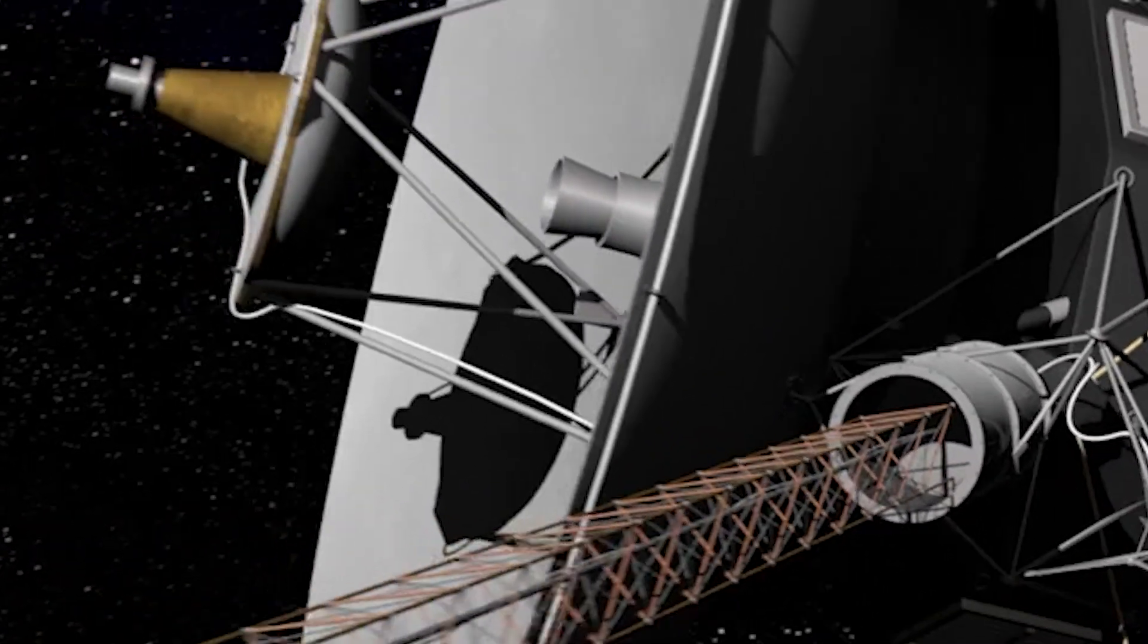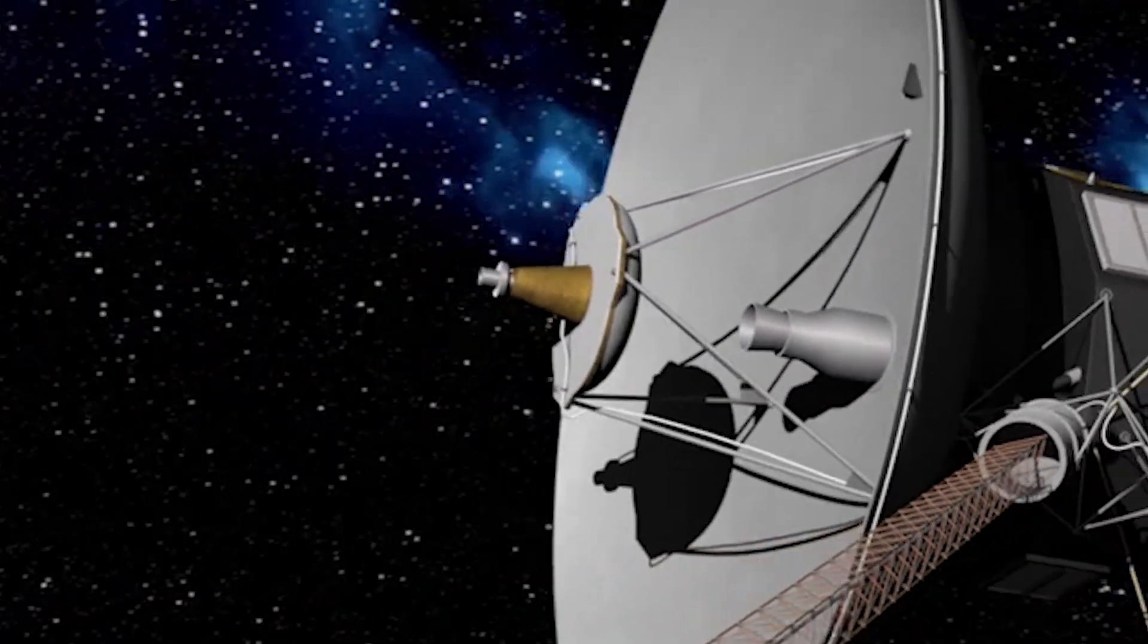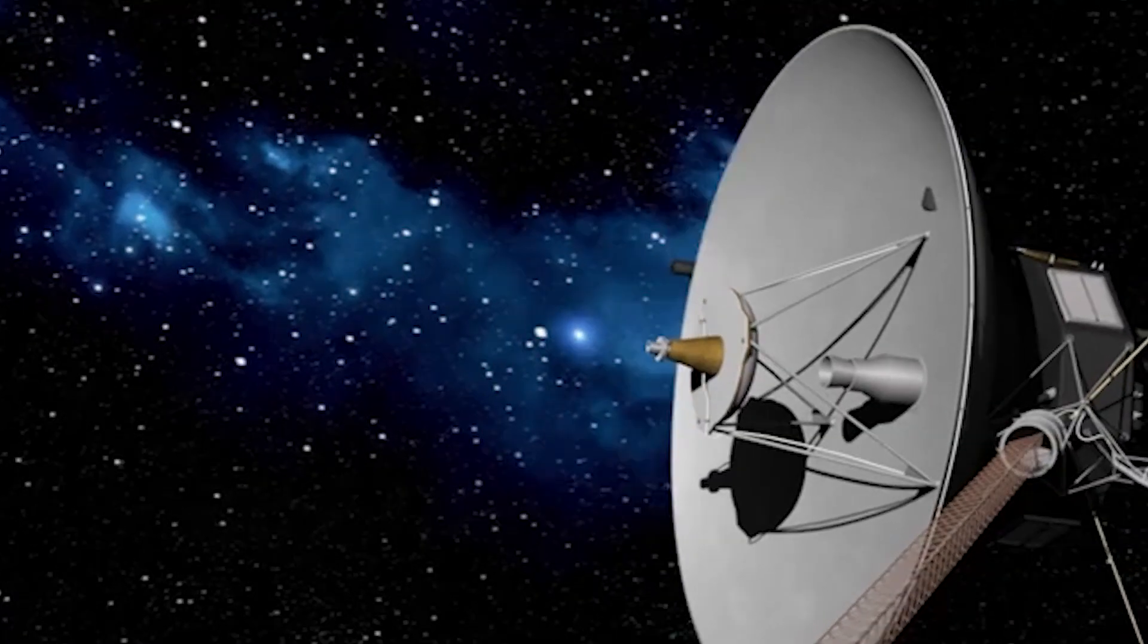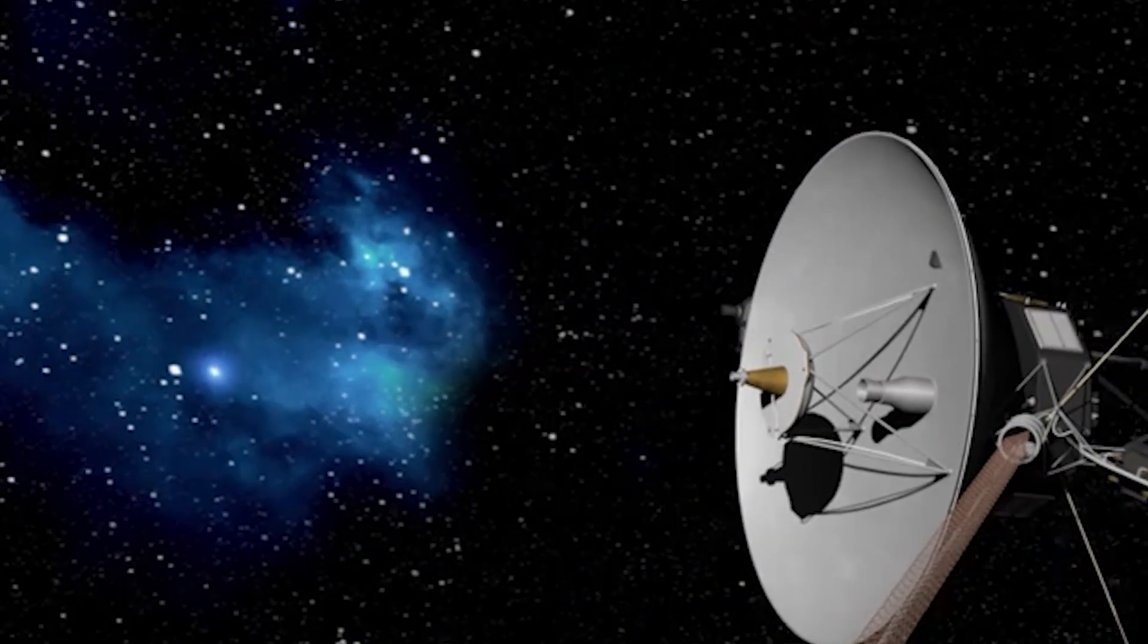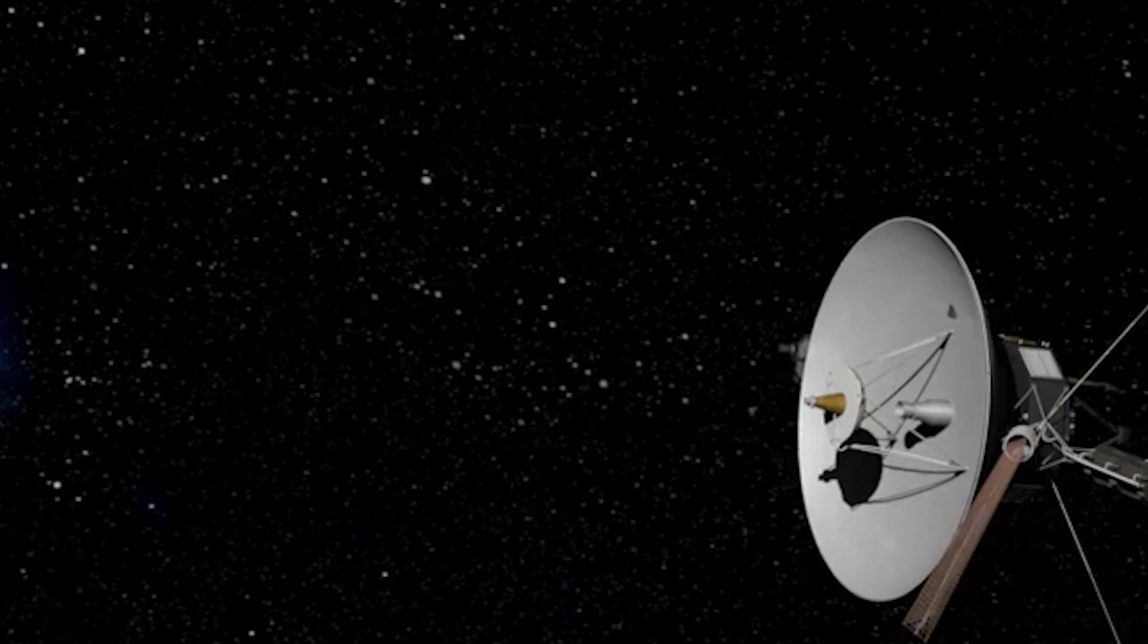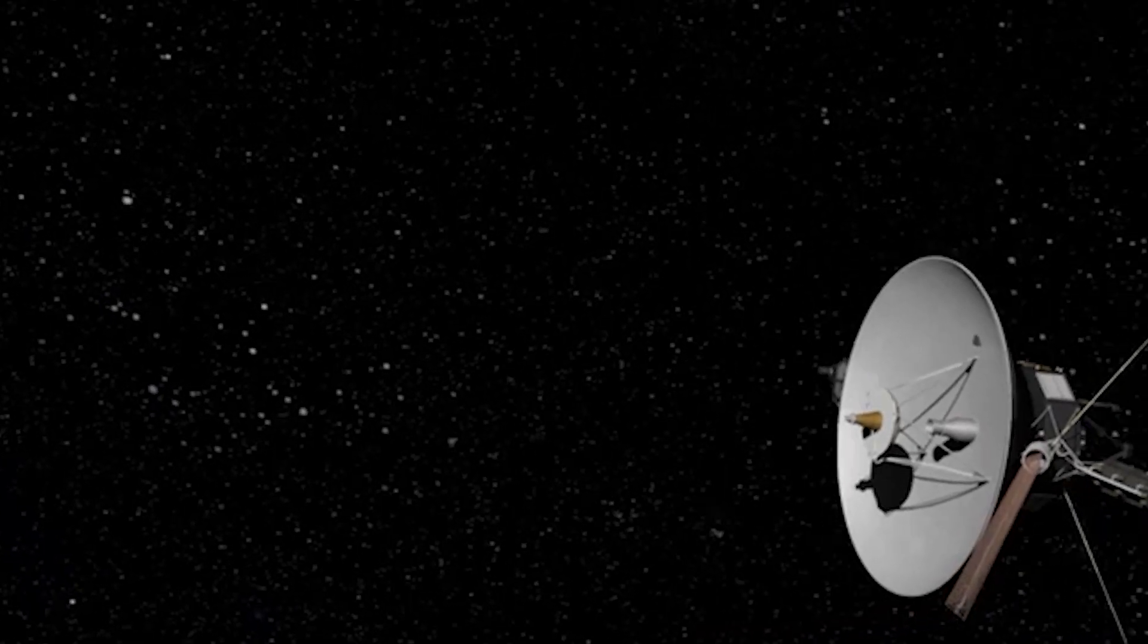Until then, the clock is ticking. With every passing year, Voyager's nuclear heart grows dimmer, its instruments shutting down one by one in a carefully chosen sequence to preserve the mission for as long as possible.